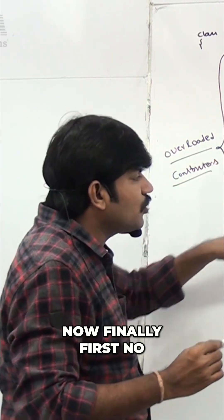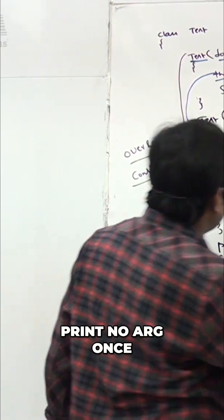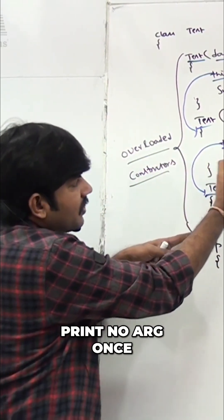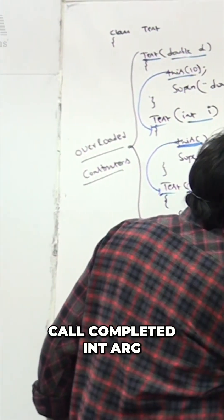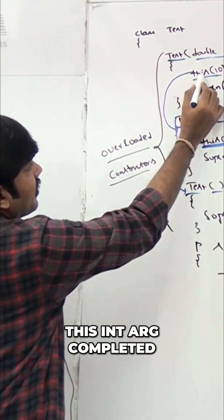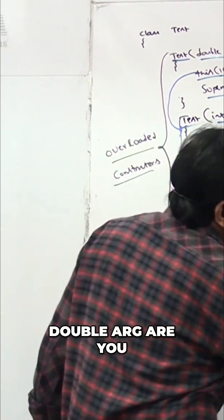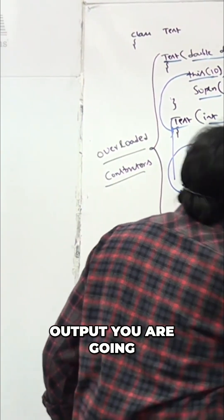Finally, first the no-arg constructor will execute and print 'no arg'. Once this no-arg constructor call is completed, the int arg constructor executes. Once the int arg is completed, the double arg constructor runs and you get the output.